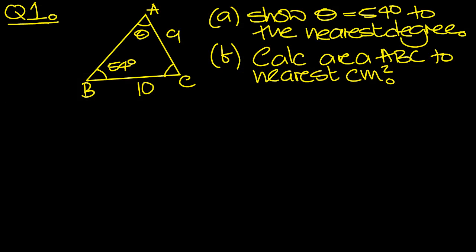So let's have a look at this then. So here, let's use the sine rule. 9 over sine 54 will equal 10 over sine theta to solve for theta here. So 9 over sine 54 is equal to 10 over sine theta.